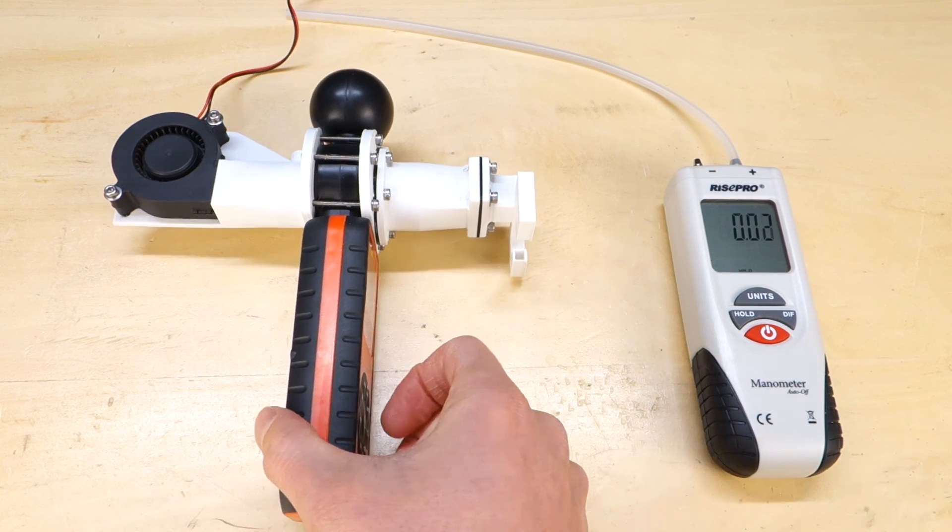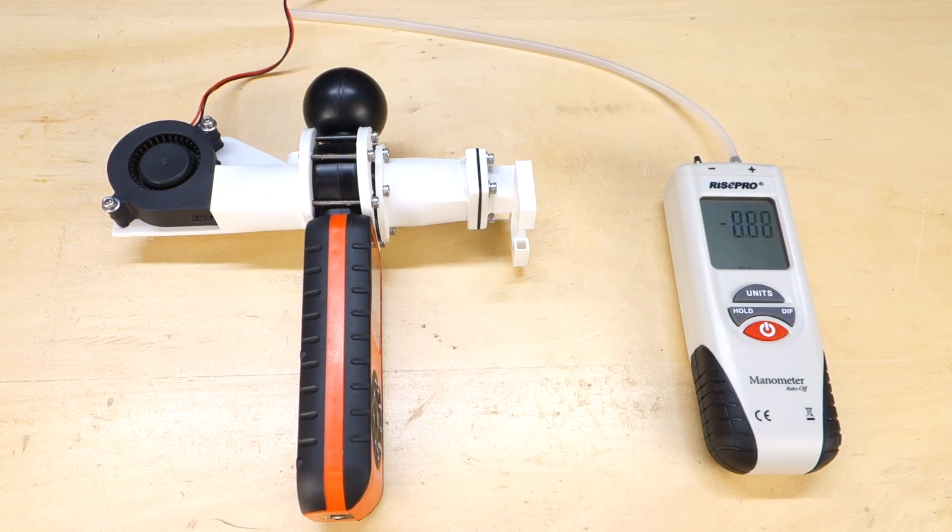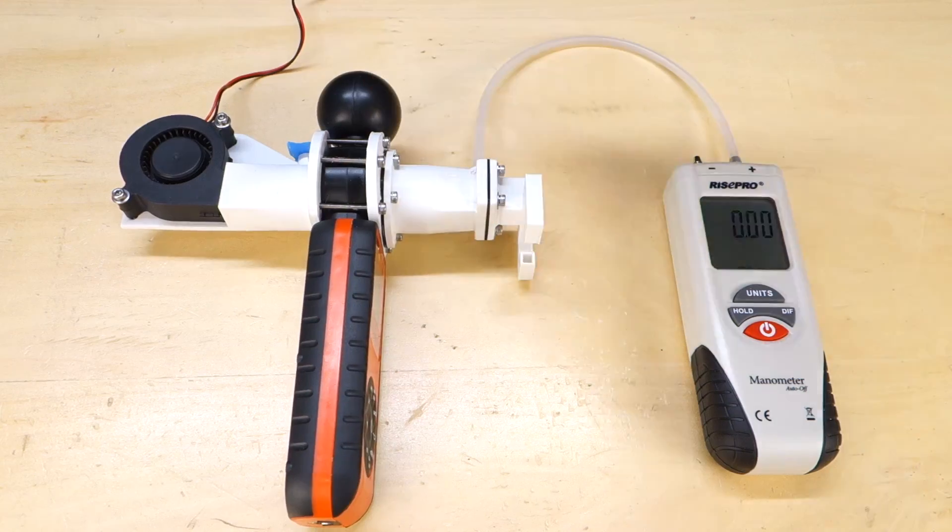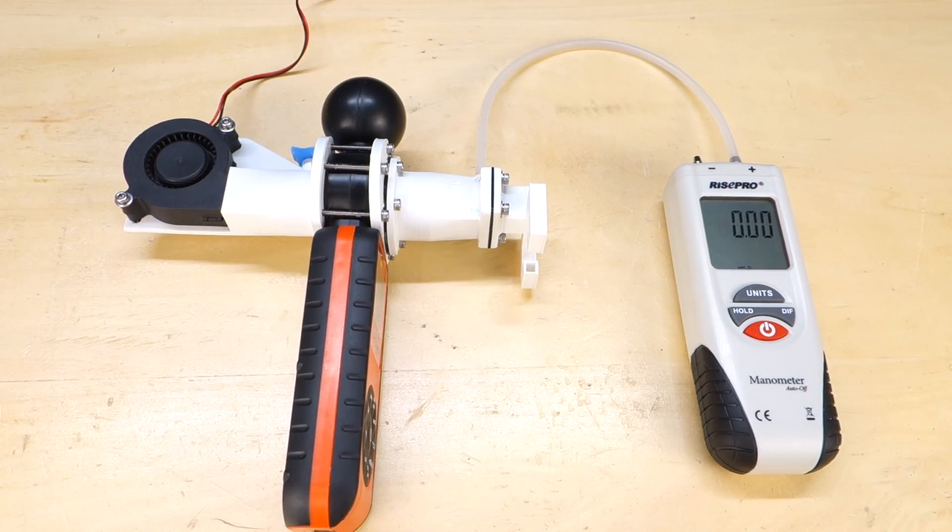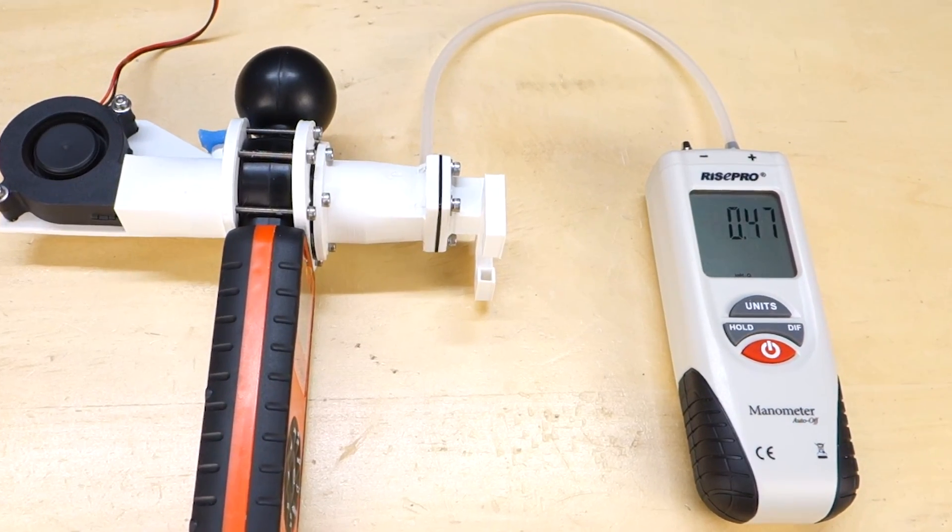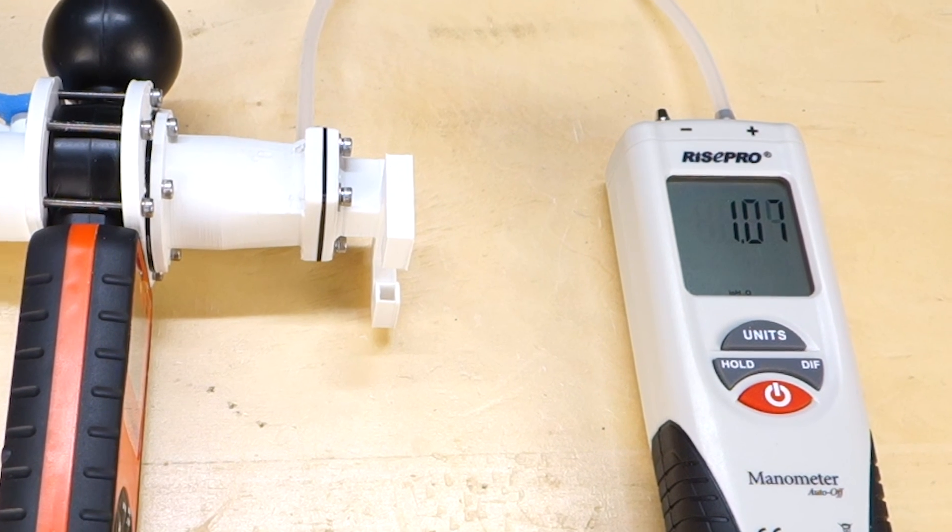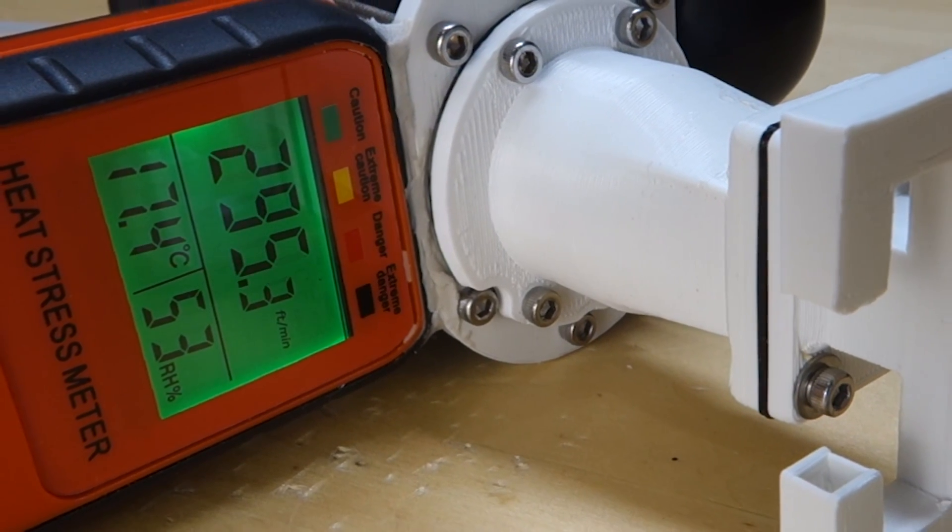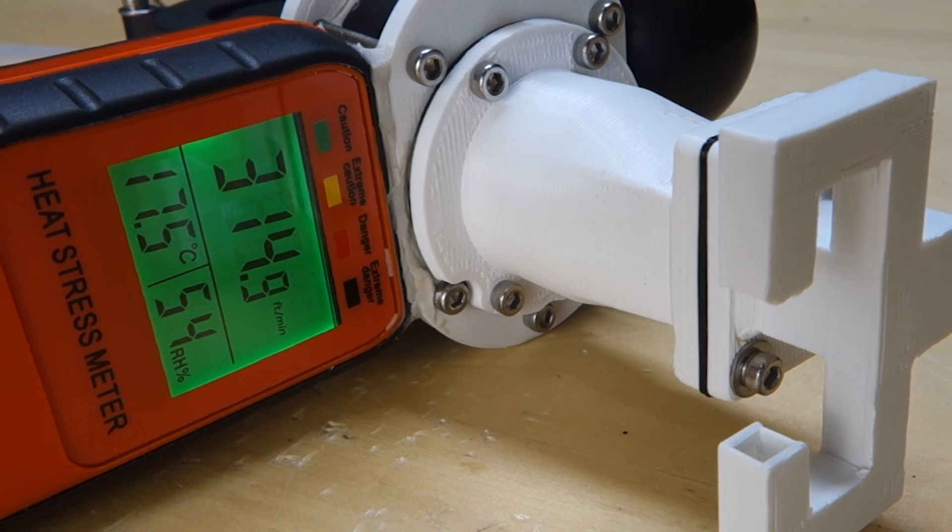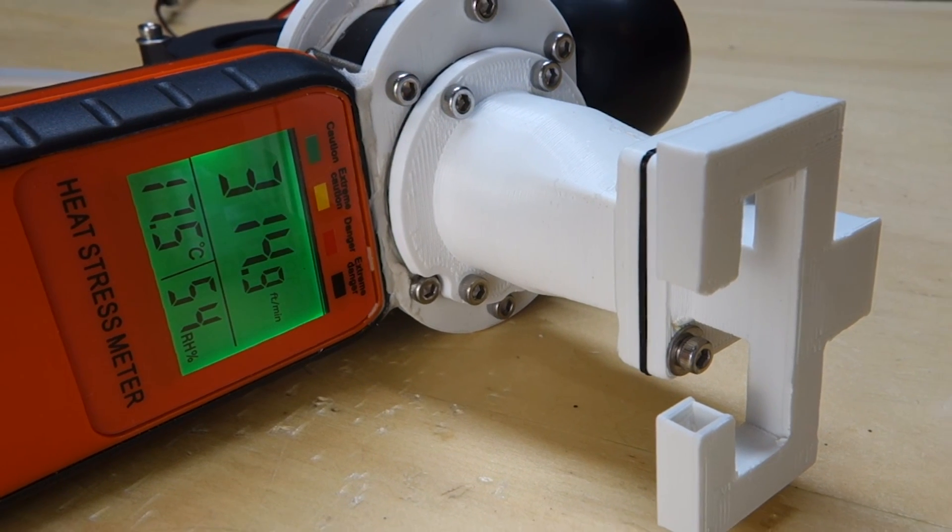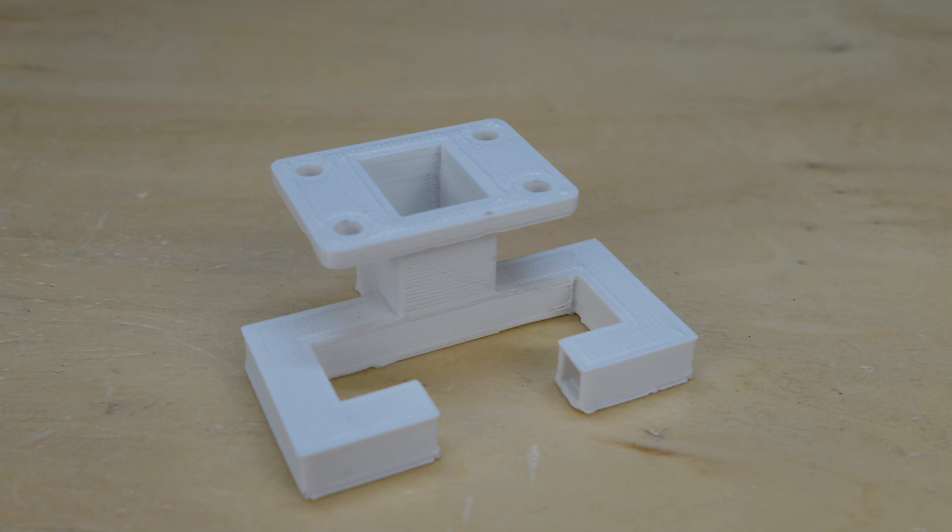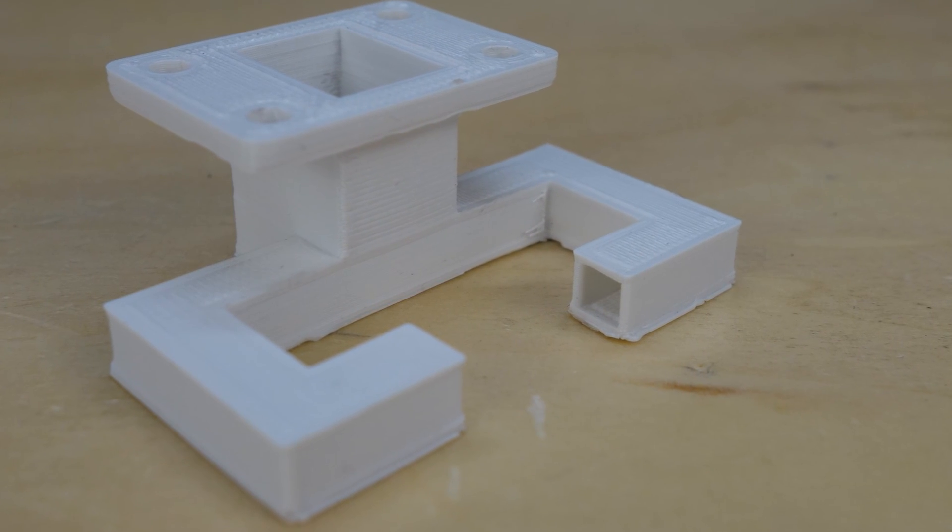However to accurately use the fan curve you must properly measure the pressure drop of your part cooling duct. In fact if you don't you will get it all wrong. And you won't even know it until you assemble all the parts and won't get the airflow you need. So watch this video next where I'll show you exactly how to properly measure the pressure drop of your part cooling duct so that your fan will blow lots of air. The link will be here as soon as the video is released.